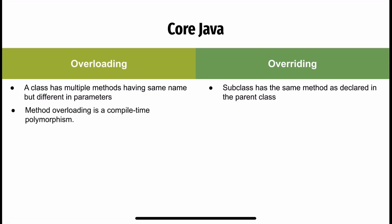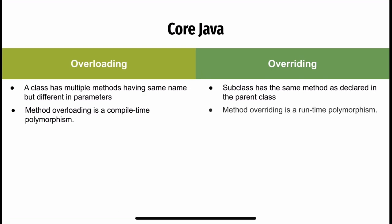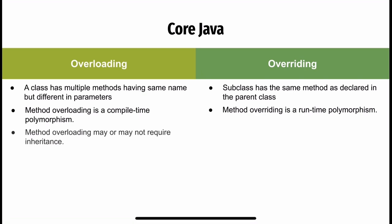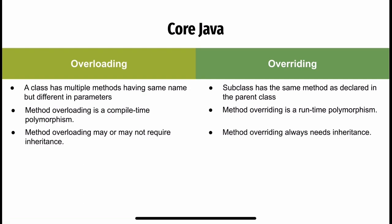Method overloading is also known as compile-time polymorphism, whereas method overriding is runtime polymorphism. Method overloading may or may not require inheritance, whereas method overriding always requires inheritance.